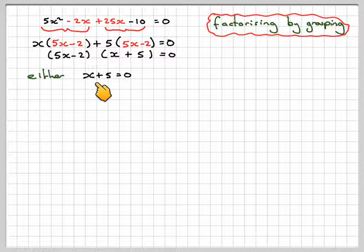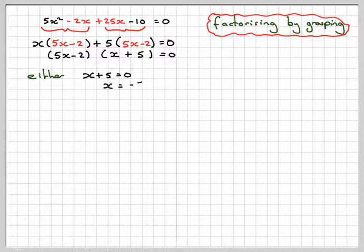So either, take this one first, x plus 5 is equal to 0, so that gives x equals minus 5.